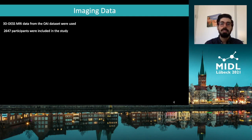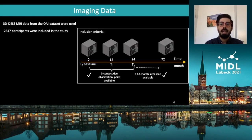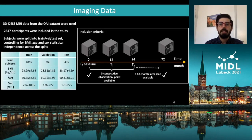About 2,000 subjects met the criteria for being included in the study. Subjects were included if MRIs from 3 consecutive time points were available, and there was also an available MRI at a 48-month distance from the last seen time point. To train our deep learning models, participants were organized into train, validation, and test sets, controlling for BMI, age, and sex statistical independence across the three splits.